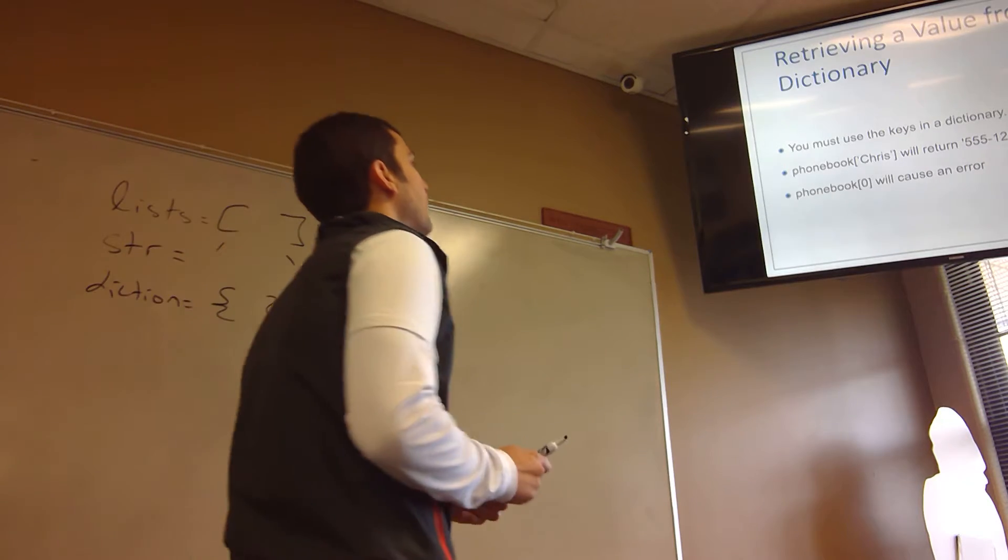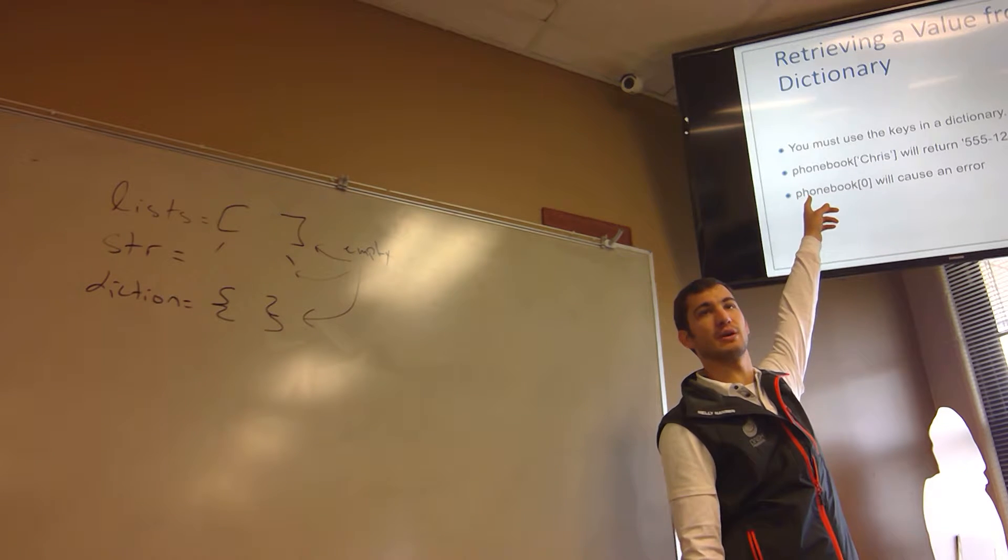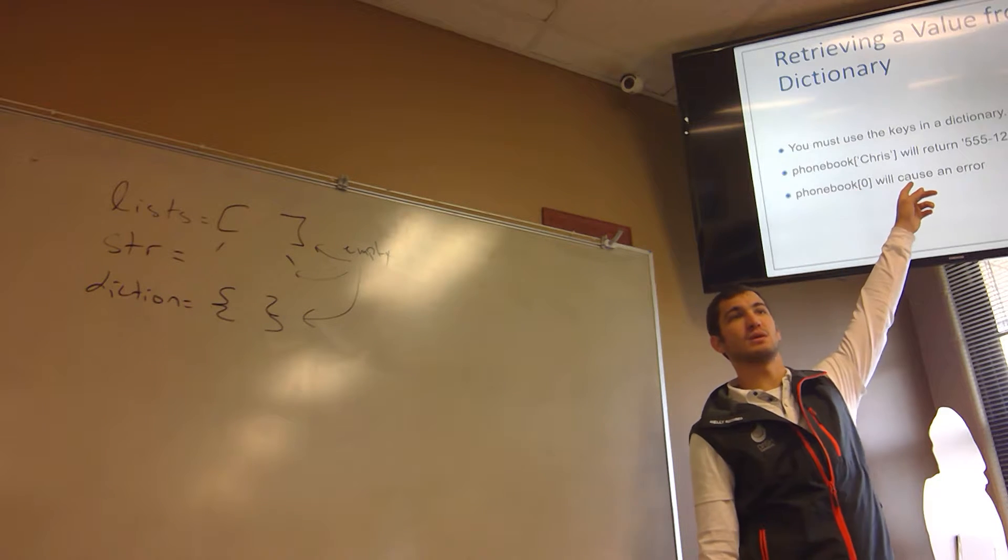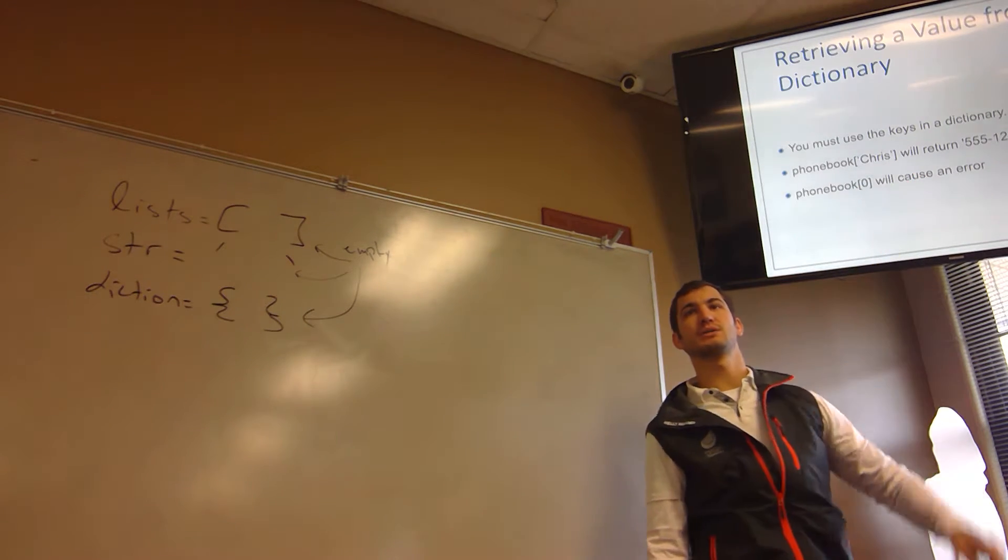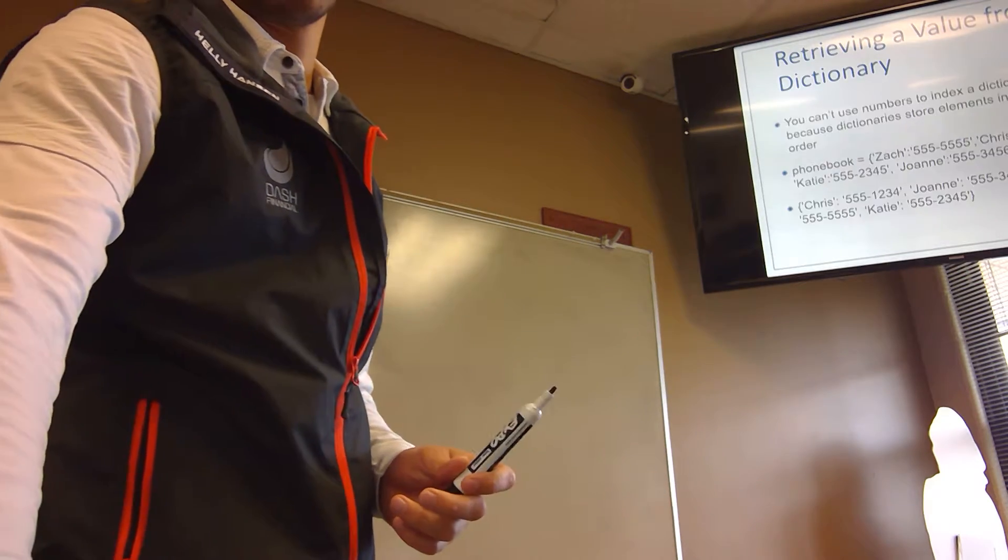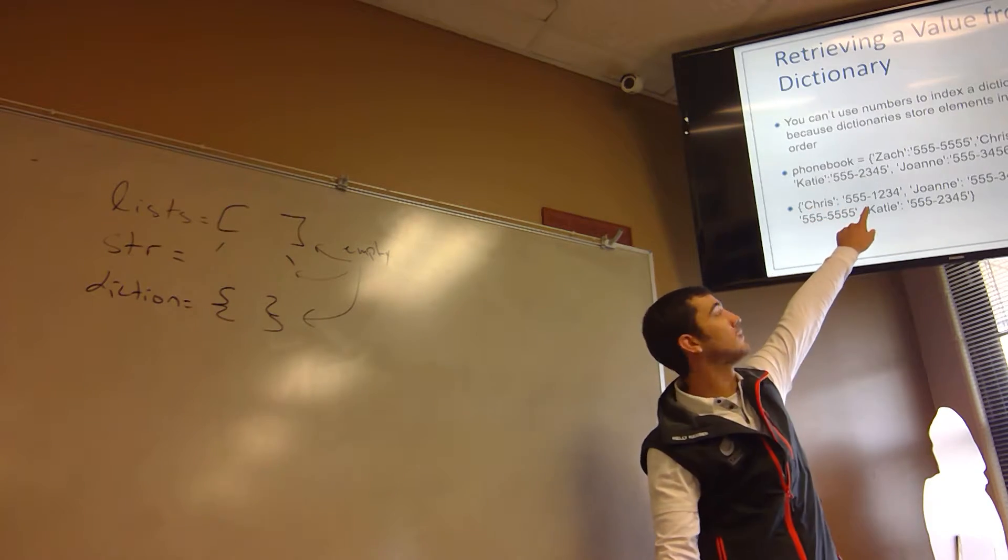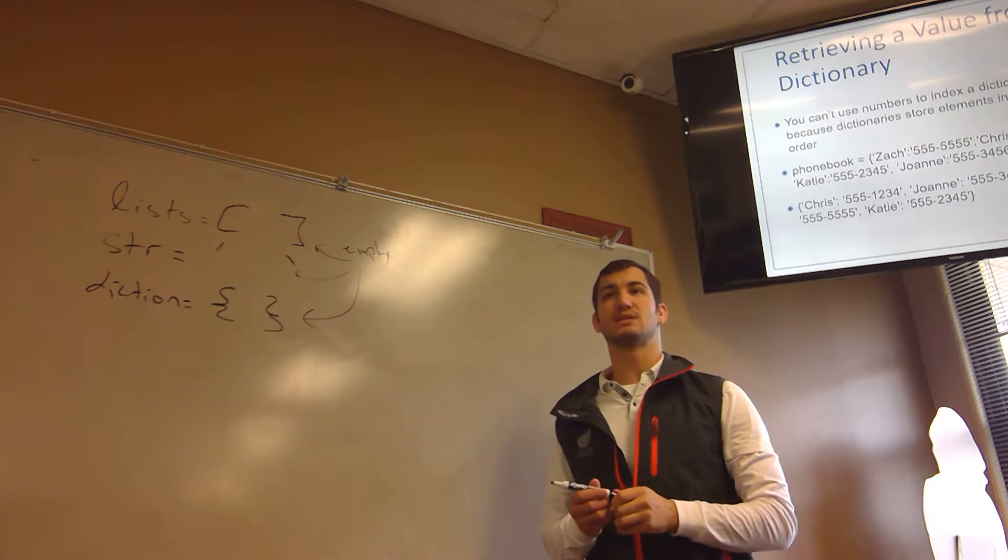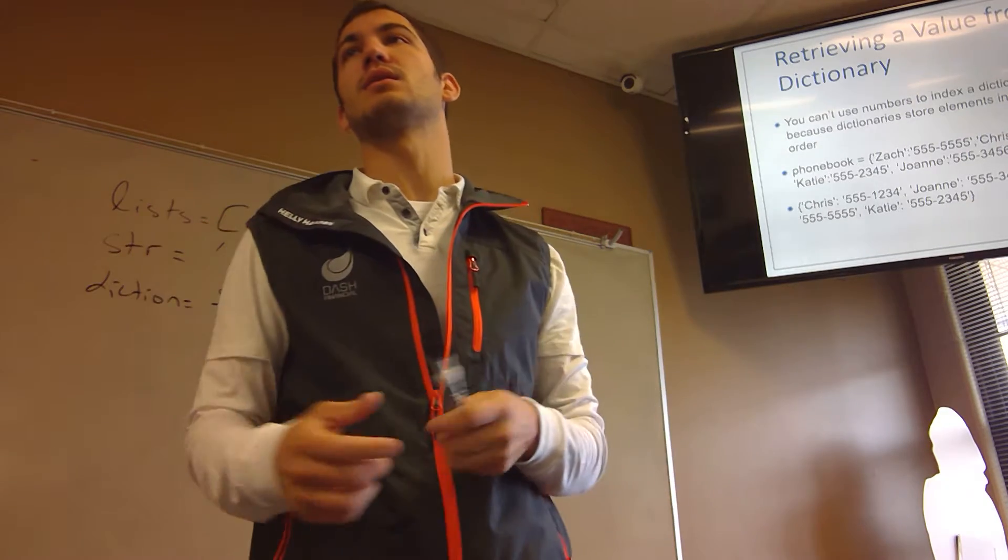So if I want to get Chris's number, I do the name of the dictionary, which is phonebook, and the key Chris, and that gives me the phone number. Josh: It has to be whatever this is? So whatever this is will give you this. If you do phonebook Chris gives you the number. So if you did lowercase C, it'd be a lowercase C? Yeah, it has to match exactly. If it doesn't, you get an error.